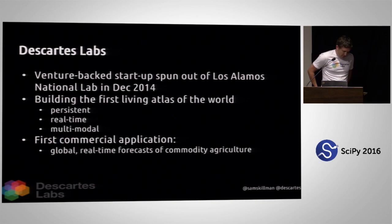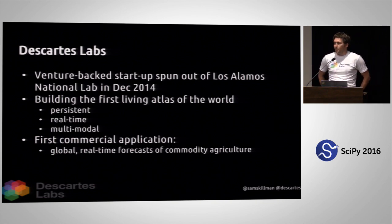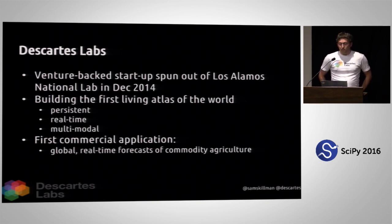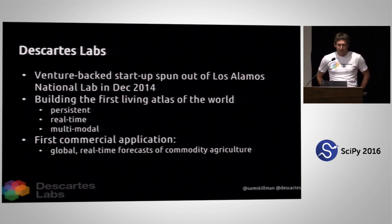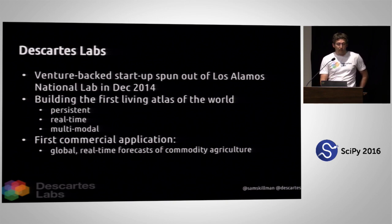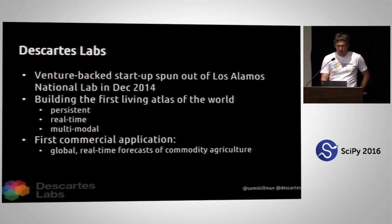Descartes Labs is a venture-backed startup spun out of Los Alamos National Lab in 2014. Our broad goal is building a living atlas of the globe using publicly and privately available satellite imagery. Our first big commercial application is monitoring globally real-time forecasts of how much food is going to be produced around the world.